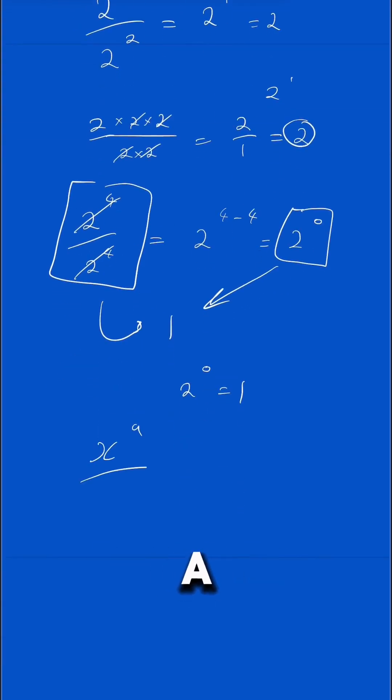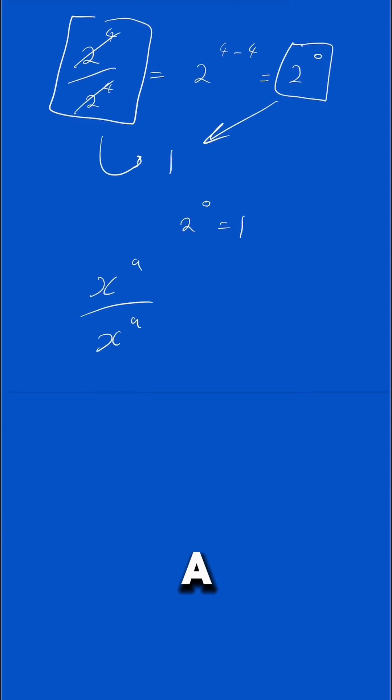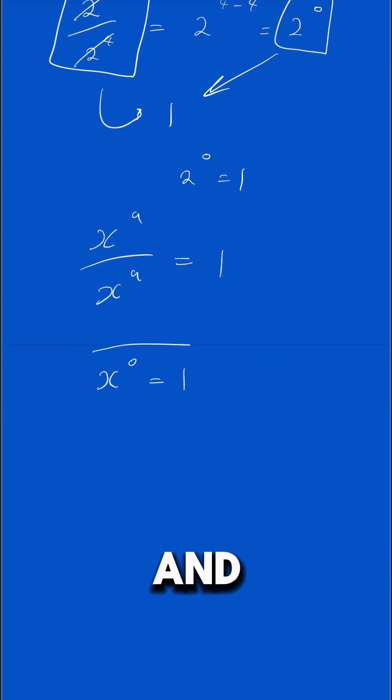What about this? x to the power of a over x to the power of a. Well, that's also just going to equal 1. And a minus a for the powers means x to the power of 0 equals 1. And there is your proof.